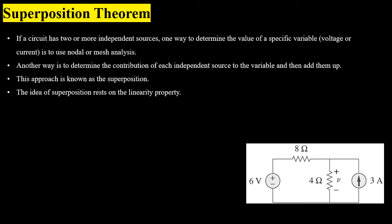Whenever for a given circuit we have two or more independent sources, which can be either voltage sources or current sources, and we have to determine the value of a specific variable — which can be either voltage across an element or current passing through an element — we have the option to use any method like mesh analysis or nodal analysis. In the given circuit we have one independent voltage source and one independent current source, and we have to find the voltage across the 4 ohm resistor, which is given by V.